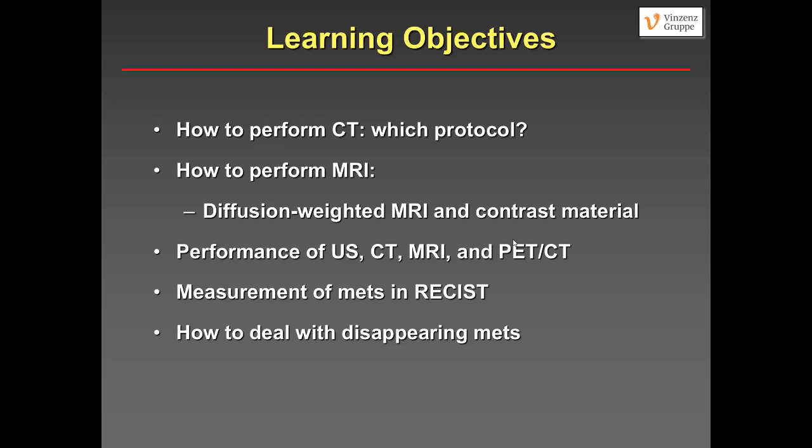What I would like to present in the next 25 minutes or so is how to perform CT and MRI, the role of contrast with MRI, the role of diffusion-weighted imaging, and an overview of what the literature says regarding the performance of various imaging modalities — ultrasound, CT, MRI, PET-CT — and what we should actually use. And finally, how to measure liver metastases according to RECIST, and how to deal with disappearing metastases.